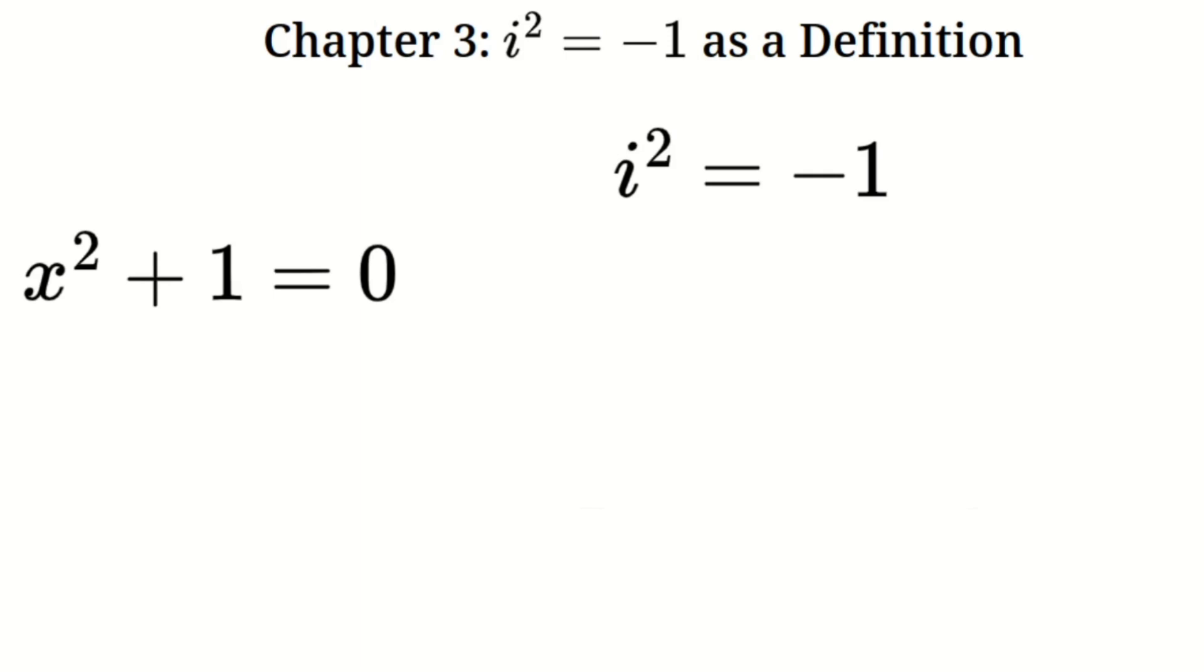For instance, what happens when we take the square root of both sides? Does the square root of i squared equal i? Not necessarily. It could also be negative i. This brings us to an exciting question. Can we create a system where these ambiguities disappear?